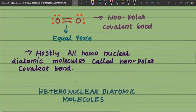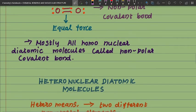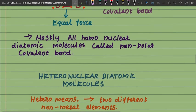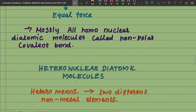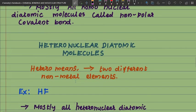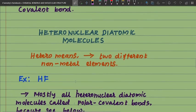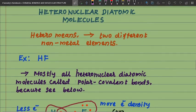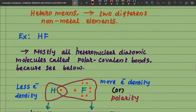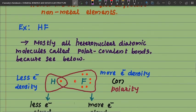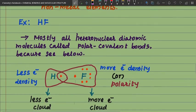Next, heteronuclear diatomic molecules — hetero means two different non-metal elements. For example, HF (hydrogen fluoride). Mostly all heteronuclear diatomic molecules are called polar covalent bonds.